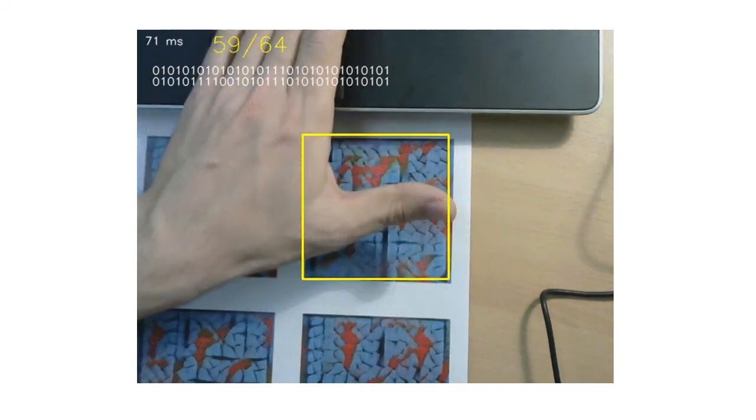Surprisingly, the resulting markers are relatively robust to occlusions, even though the occlusions were not modeled by our rendering network. This suggests that some sort of distributed representation is learned within our approach.